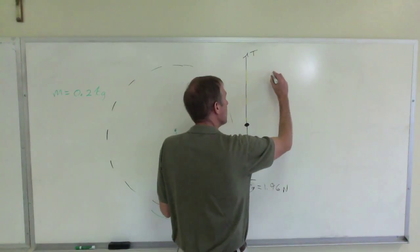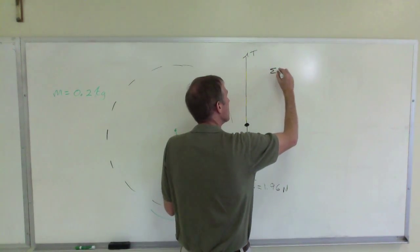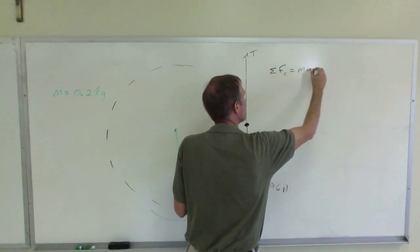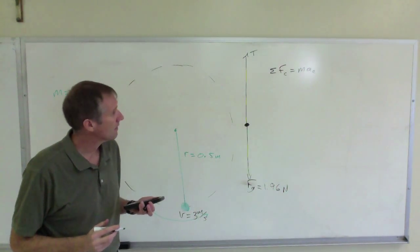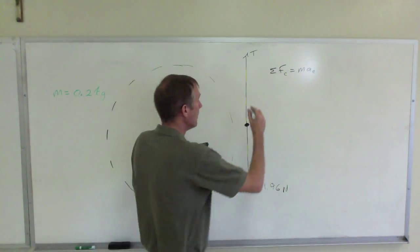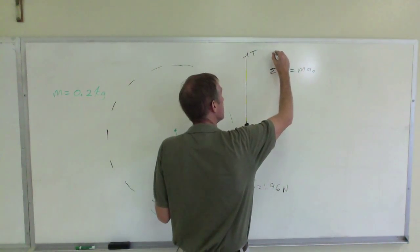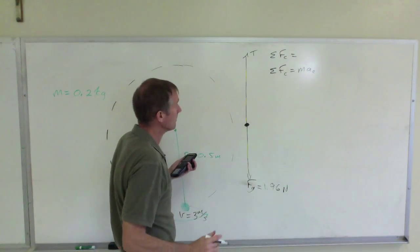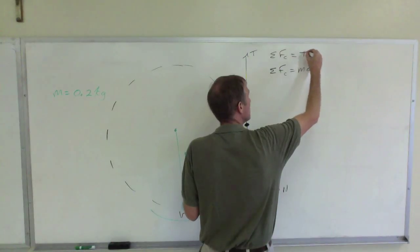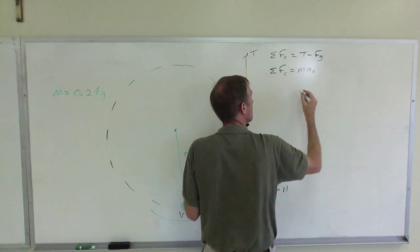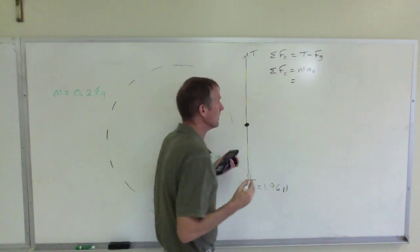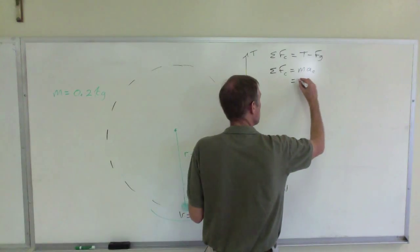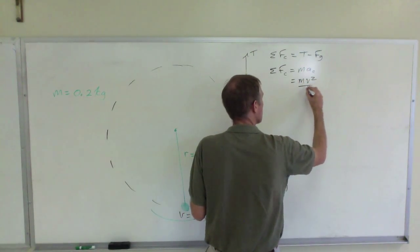Now you know that centripetal force equals mass times centripetal acceleration. You also know that the centripetal force is the difference between the tension and the weight. They are in opposite directions. So M times AC. Remember that AC is V squared over R. So this is going to be M V squared over R.